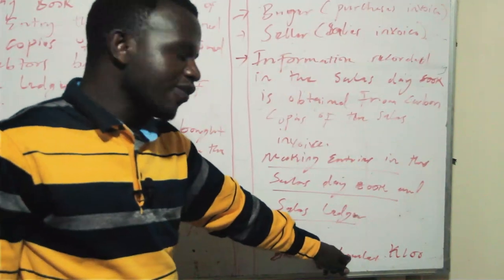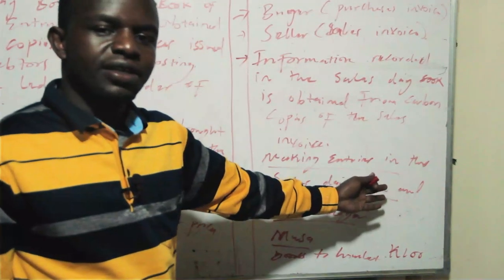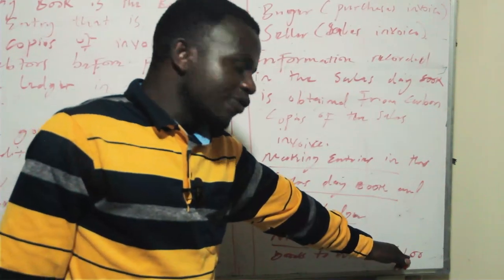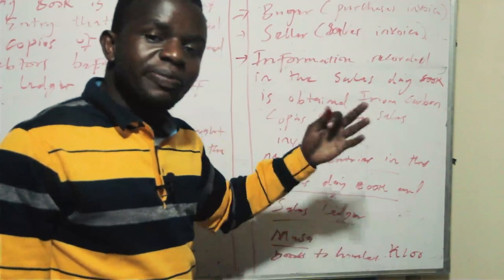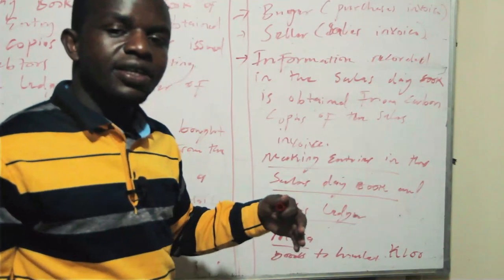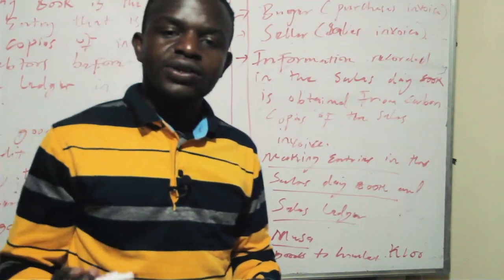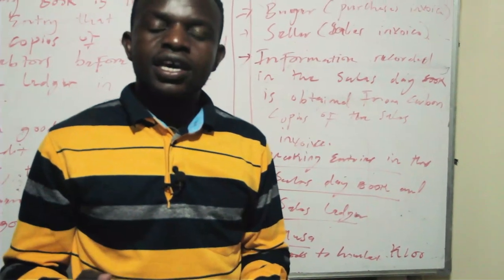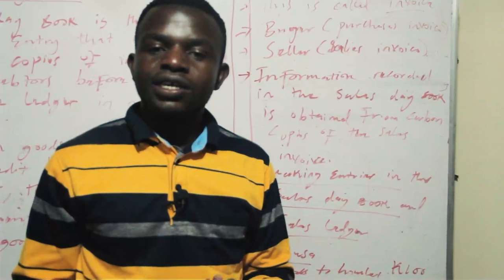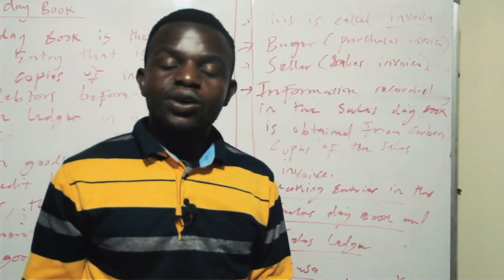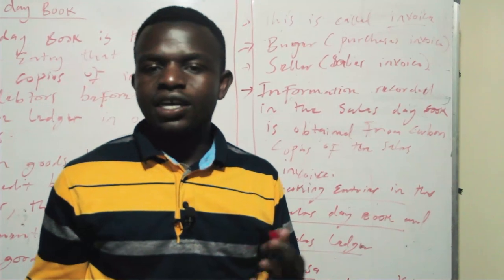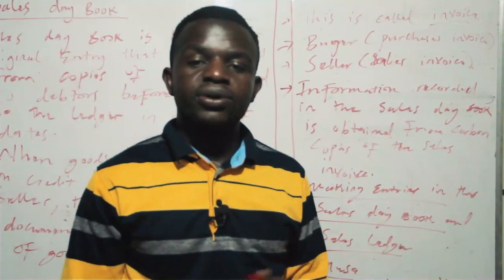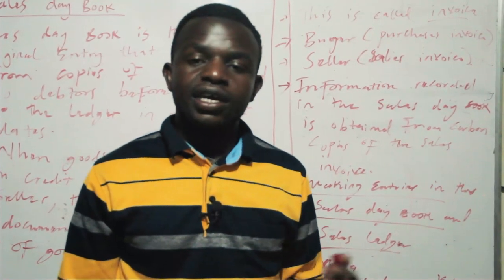In the personal account of Hamlet, the 100 kwacha is going to be shown on the debit side, because Hamlet is receiving goods worth 100 kwacha but is not paying for those goods. That's what I mean when I say the personal accounts in the sales ledger are going to be debited. Then the total credit sales in the sales account in the general ledger is going to be credited.